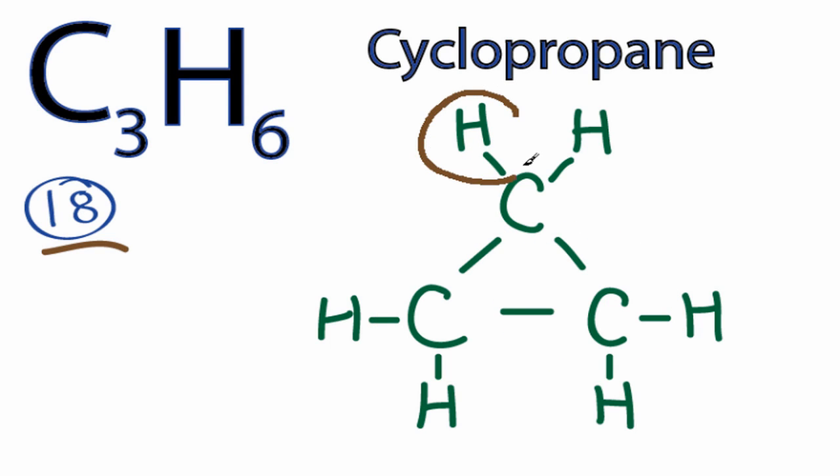And then the hydrogens each have a single bond, so they have two valence electrons. So their outer shells are full as well. So this is one possible structure for C3H6. We've used 18 valence electrons. The octets are satisfied for each of the atoms. So cyclopropane is one option.